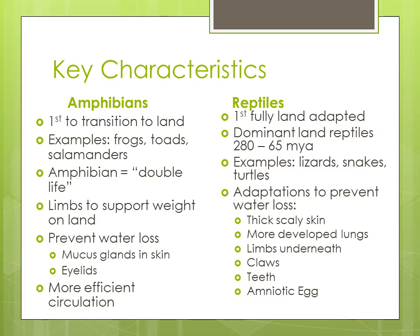First, some key characteristics about the two groups, starting with amphibians. Amphibians were the first vertebrates to transition to land — fish were in water. Examples of amphibians are frogs, toads, and salamanders. The word amphibian means 'double life': amphi means double, bio means life. So amphibian means these vertebrates have a double life — their juvenile stage is in the water, like tadpoles, and their adult stage can move to land or go between land and water, like a frog.